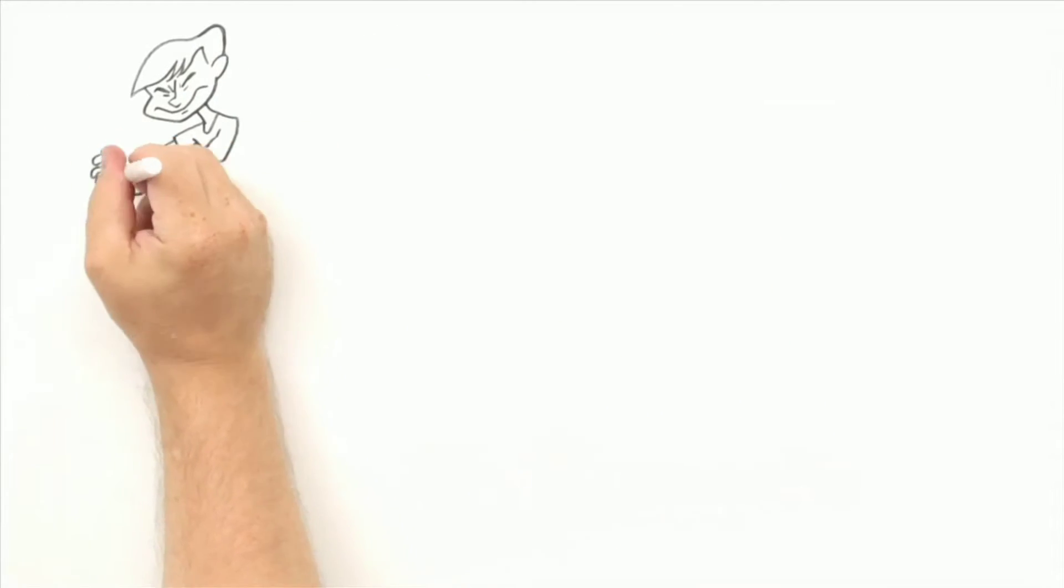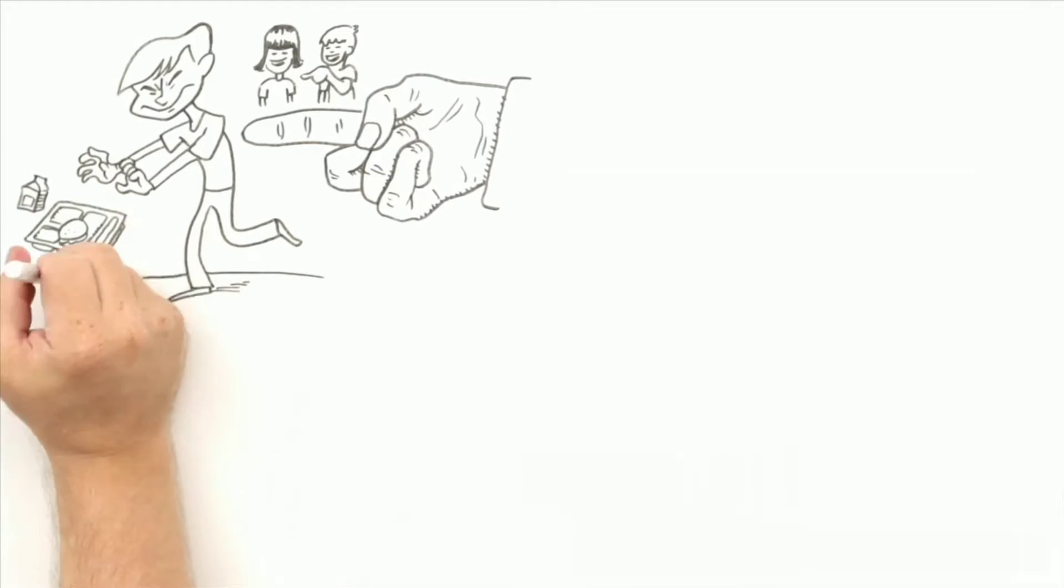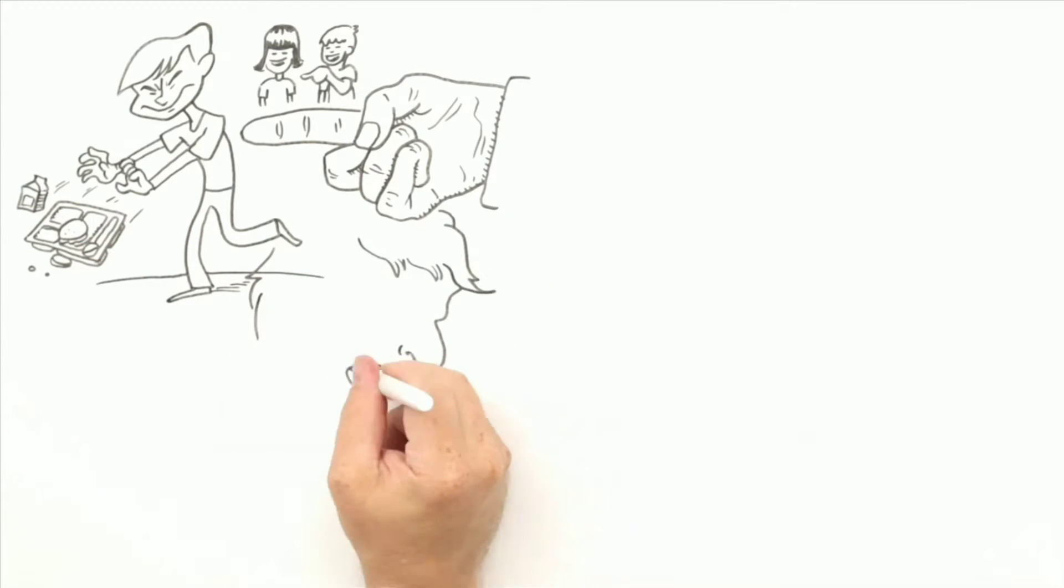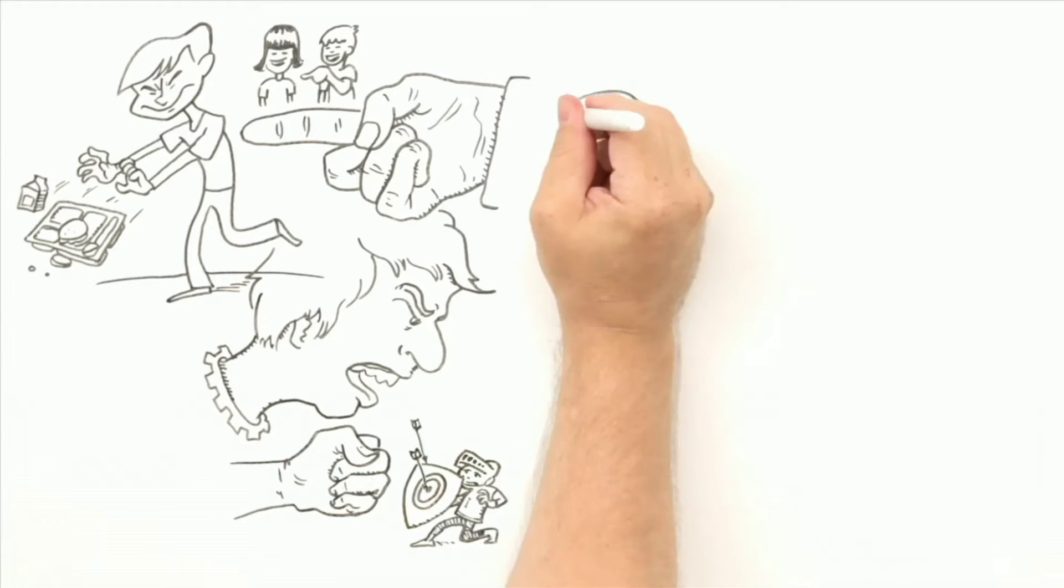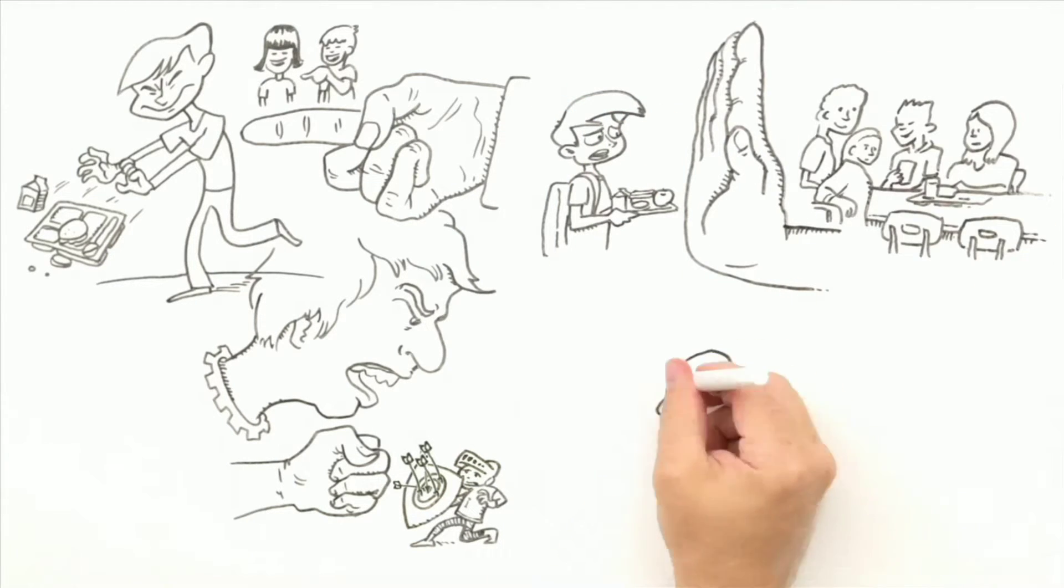Ibat-ibang klase ang mga bully. May nanunulak. Nagnanakaw o naninira ng gamit. May nanunukso o nangiinsulto. Ang iba naman ay nang-echepwera at nagkakalat ng chismis sa internet o sa text.